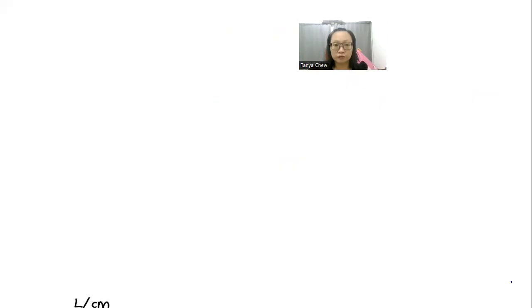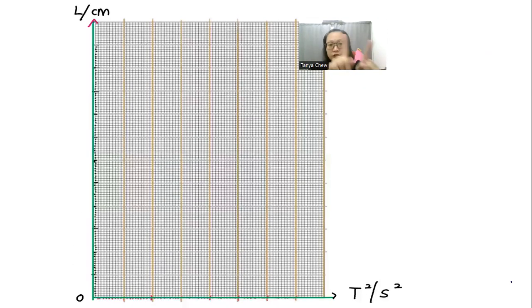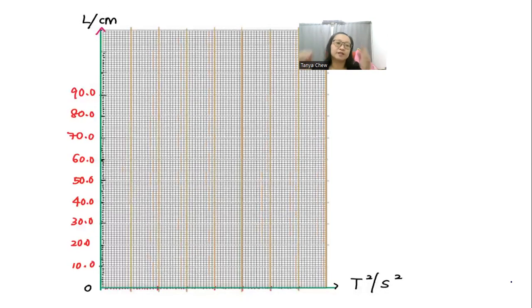So since I have an idea on what are the scales that I'm supposed to use on my graph, just transfer all these numbers to your graph. Label your y-axis and x-axis correctly together with the appropriate units. The question mentioned you have to start your L with 0. So not a problem. And this is my scale: I start with 0, then 10, 20, 30, 40, 50, 60, 70, 80, 90. So I have already used 9 large squares. So I'm safe for my y-axis because I have used more than 6 large squares.